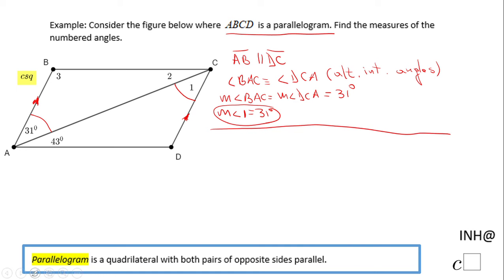Similarly, we can find the measure of angle 2. This one. This angle here is congruent to this angle here because they are alternate interior angles. Why?